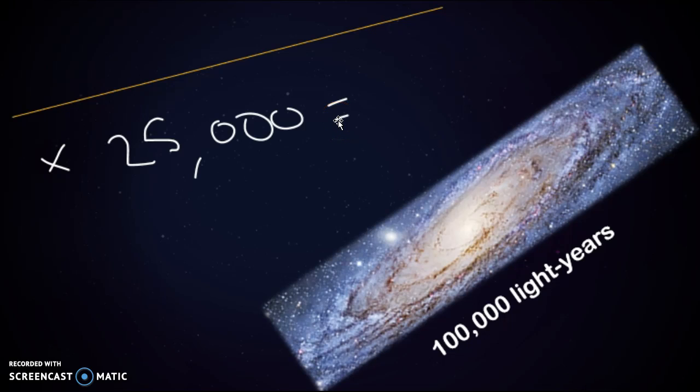Which is about 100,000 light years, and that's a huge distance. Light is so fast that it can go around the world seven times in just one second, and it would take it 100,000 years to travel across the diameter of the Milky Way galaxy.